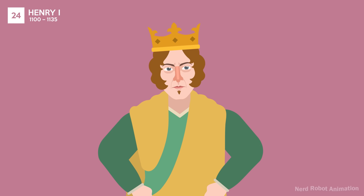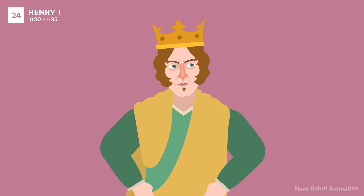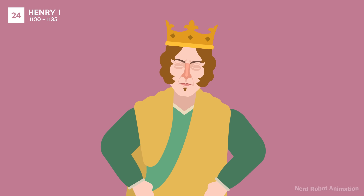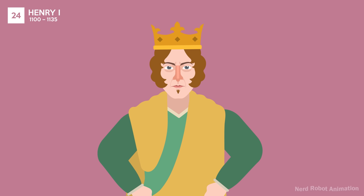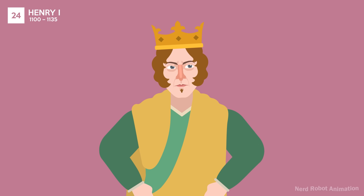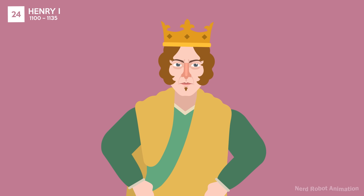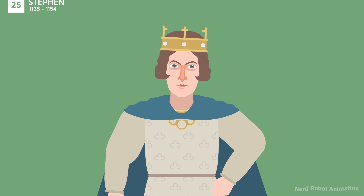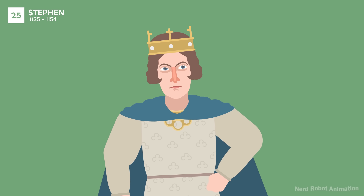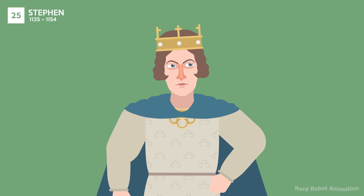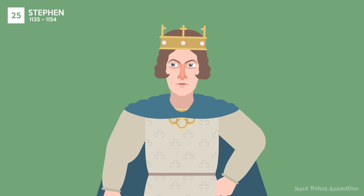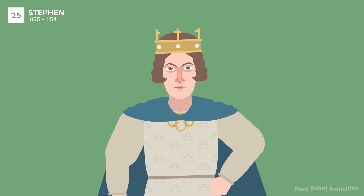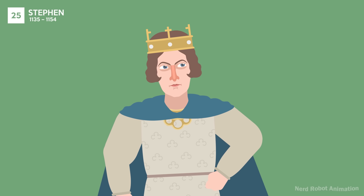Henry I, known for his administrative efficiency, issued the Charter of Liberties, a precursor to the Magna Carta. His reign saw the tragic loss of his heir in the White Ship Disaster. Stephen's reign was dominated by a civil war known as the Anarchy, fought over succession with Empress Matilda. His reign was chaotic and marked by a breakdown in royal authority.